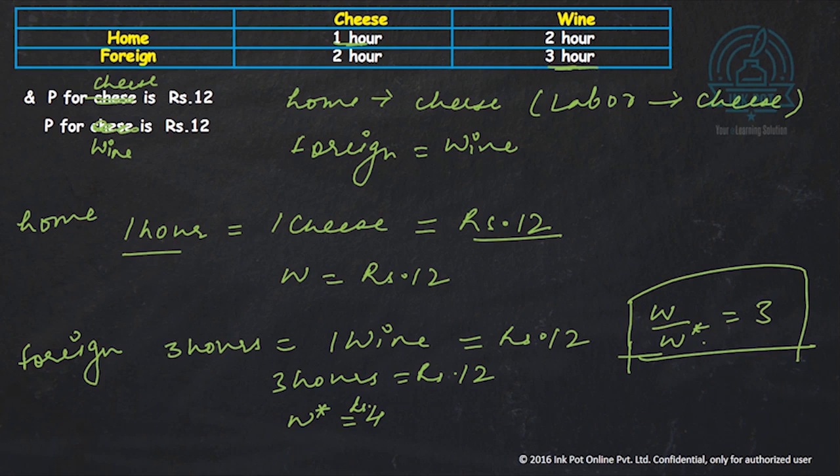Same thing. We have home. We have foreign. We have the labour hours requirement of cheese and wine. The same thing as what we just studied. I'm changing this.